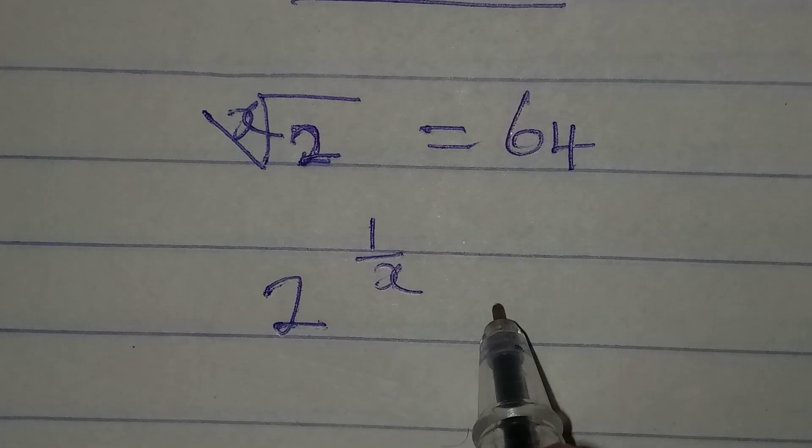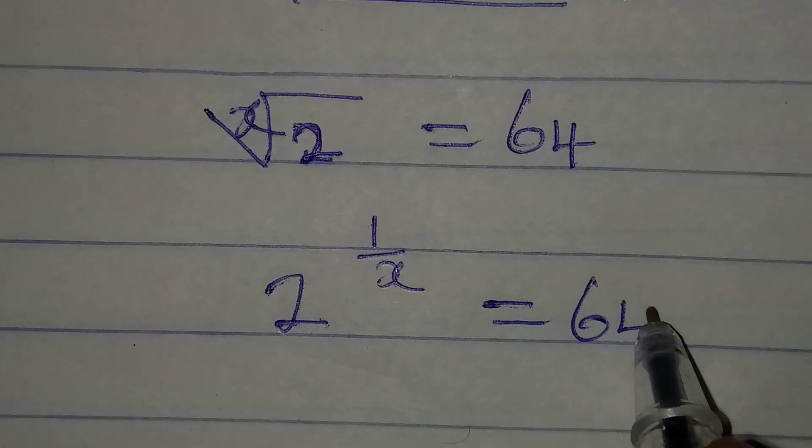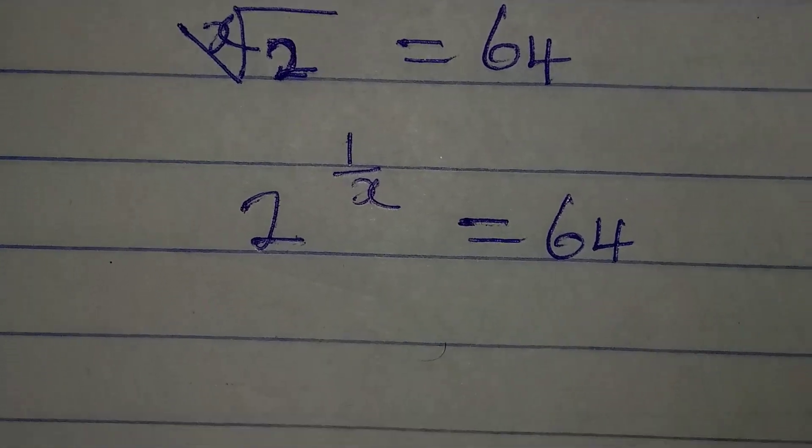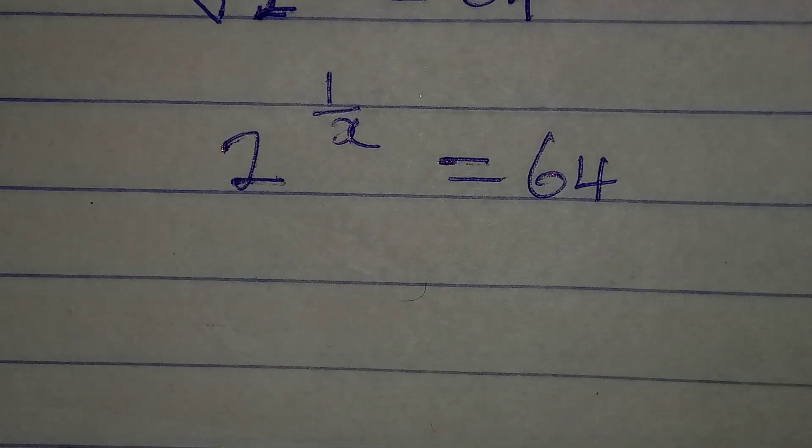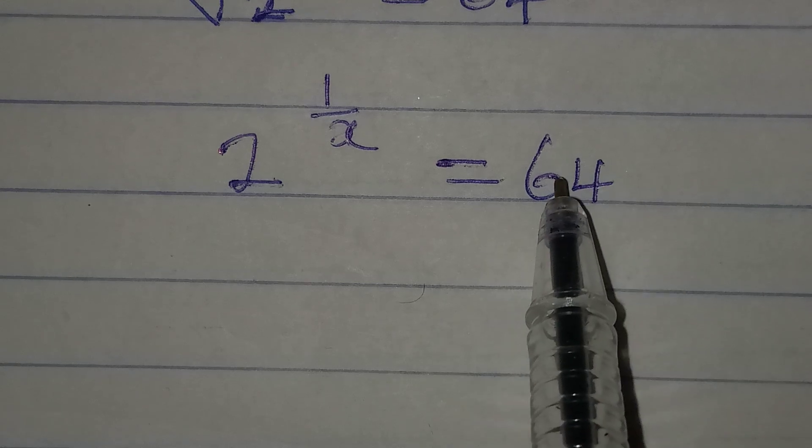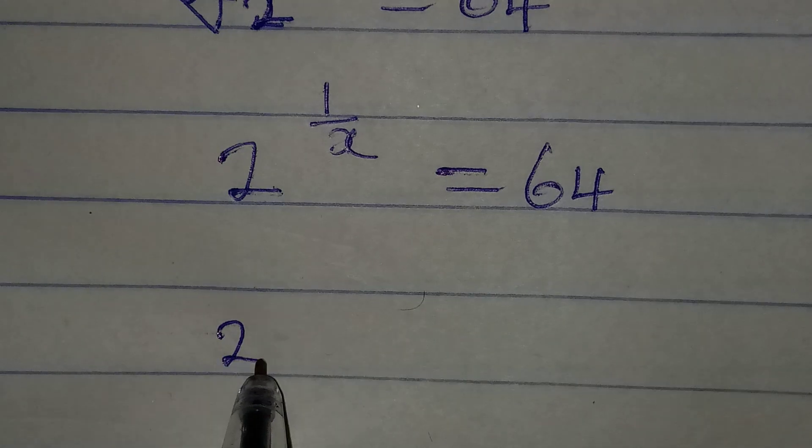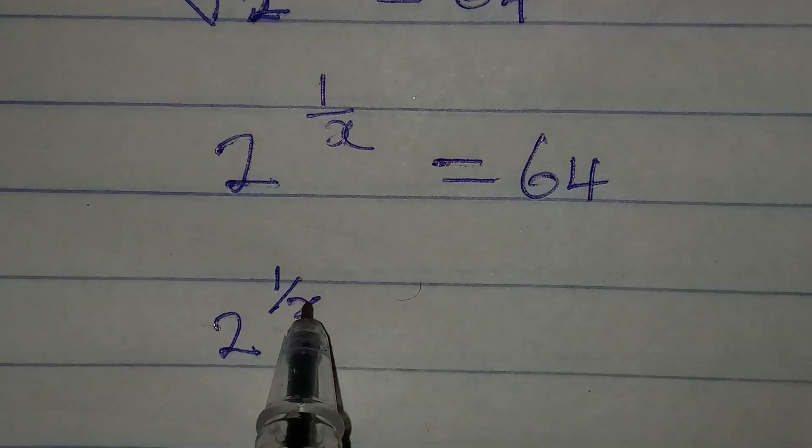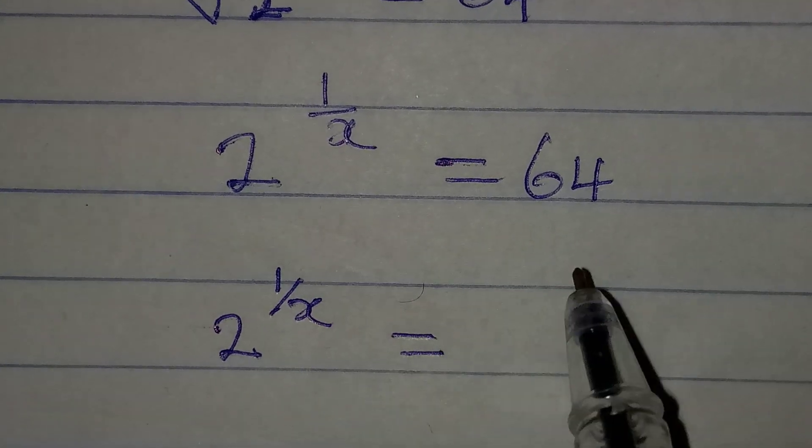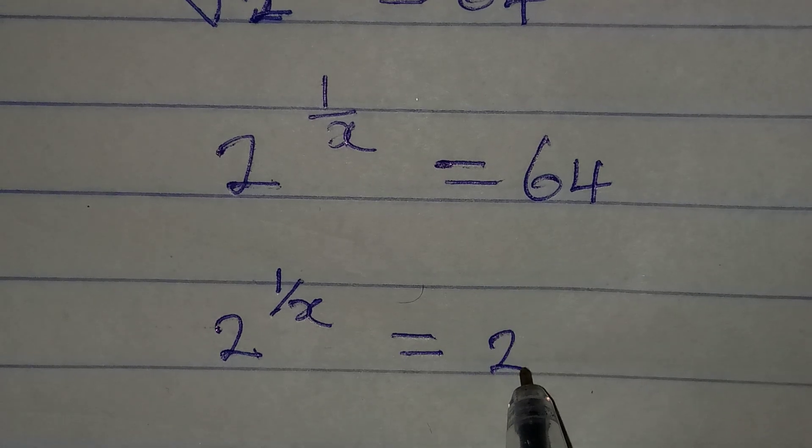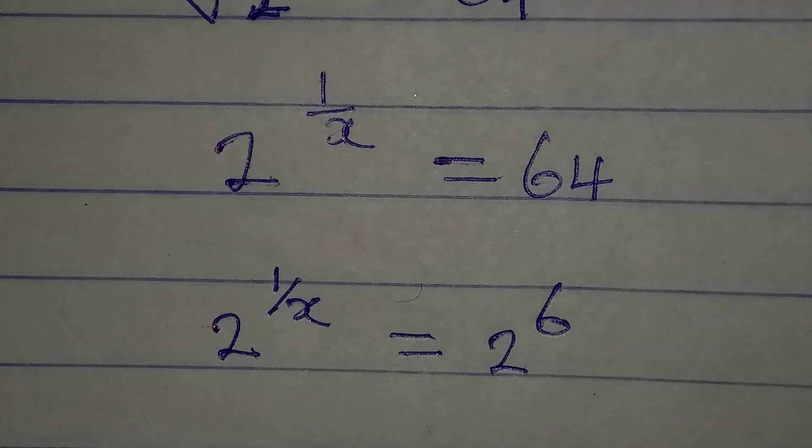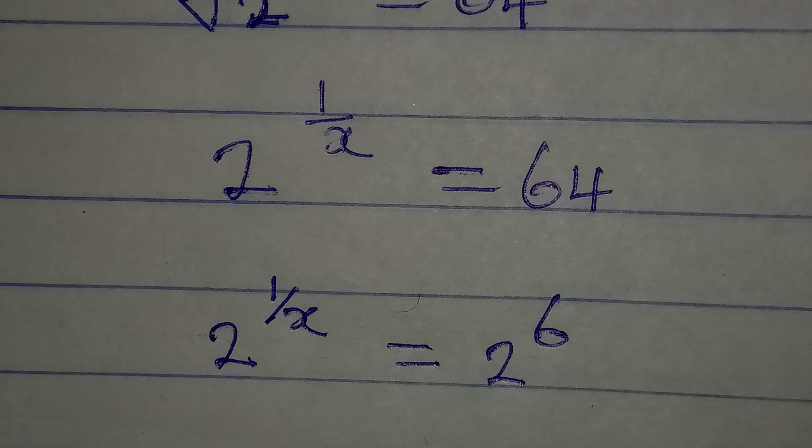Which is equal to 64. From here our next target is making sure that 64 is written in index form to have 2 as the base. So we have 2 to the power of 1 over x which will be equal to 64 is 2 to the power of 6, that is 2 times 2 times 2 in 6 places.